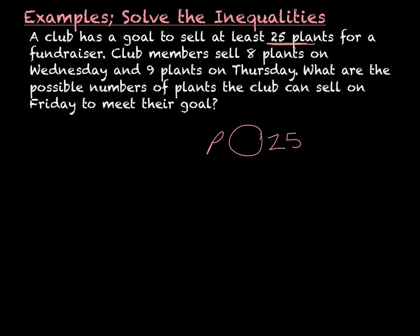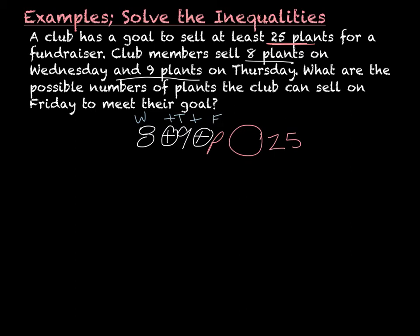We have to do something with the plants. They've already sold eight plants and nine plants — that's eight plus nine on Wednesday and Thursday. But then they're also going to have to sell more plants on Friday. So it should be eight plus nine plus whatever they sell on Friday, and it needs to be greater than or equal to 25. So my final problem is: eight plus nine plus P is greater than or equal to 25.